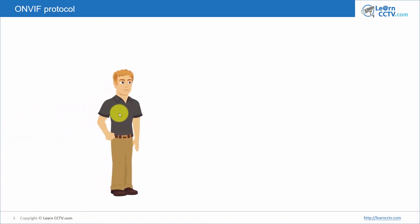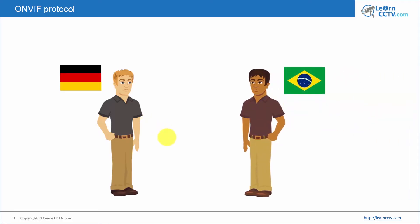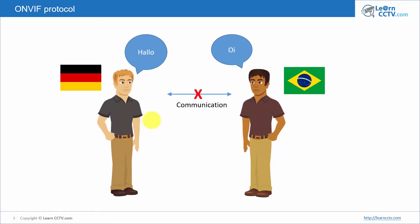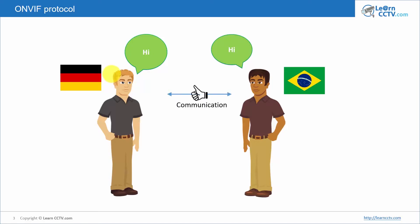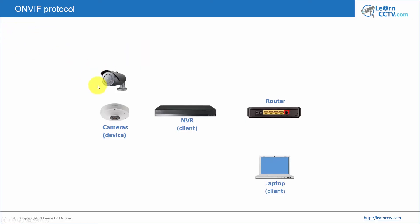Let's work on an analogy here, a comparison. Let's say we have a guy who's German and another guy who's Brazilian. They start speaking to each other but the communication is not possible because they speak different languages. So they need to find a common language. The idea is that both speak English now — a common language — and they can communicate. The same happens with the ONVIF protocol.